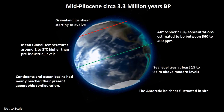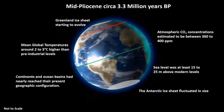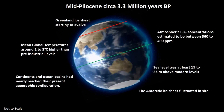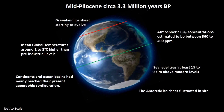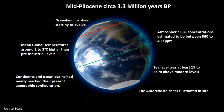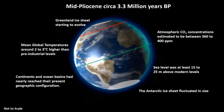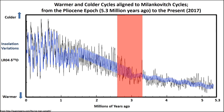Atmospheric carbon dioxide concentrations had reduced to between 360 and 400 parts per million. However, global mean temperatures were still around 2 to 3 degrees centigrade higher than pre-industrial levels, and sea level was between 15 and 25 meters above modern levels. Over the next 700,000 years the cycles continued, but still no long-lasting ice sheets developed.